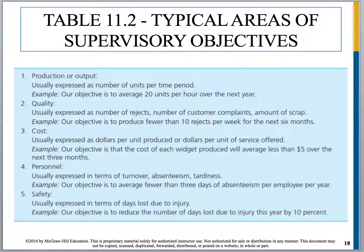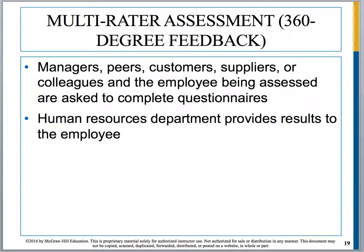There are typical areas of objectives supervisors should always consider. Production or output is usually expressed as a number of units per time period — for example, 'our objective is to average 20 units per hour over the next year.' Personnel is usually expressed in terms of turnover, absenteeism, and tardiness — for example, 'our objective is to average fewer than three days of absenteeism per employee per year.'